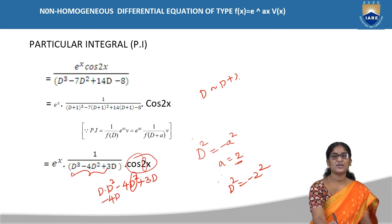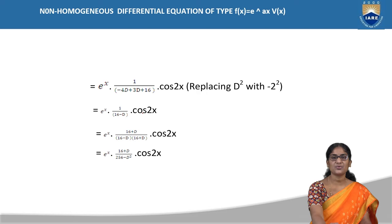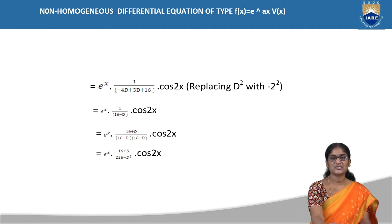To proceed further we need D² in the denominator, but we only have D. So we rationalize the denominator. The rationalizing factor for (16 - D) is (16 + D). Multiplying and dividing by (16 + D), the denominator takes the form (16 - D)(16 + D), which is a² - b² = 256 - D².